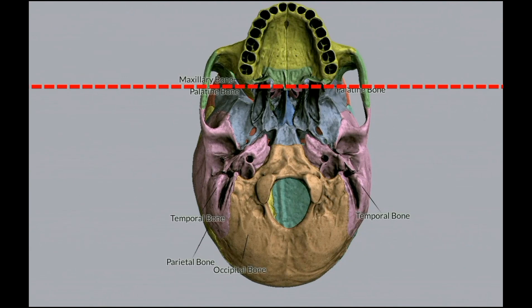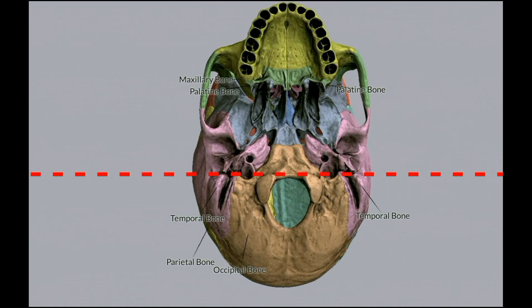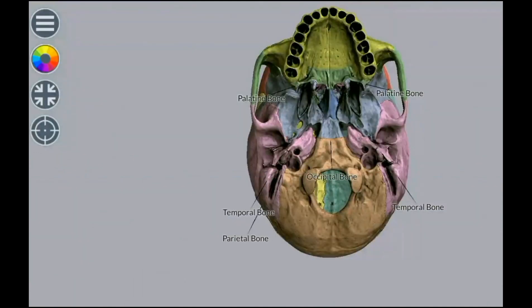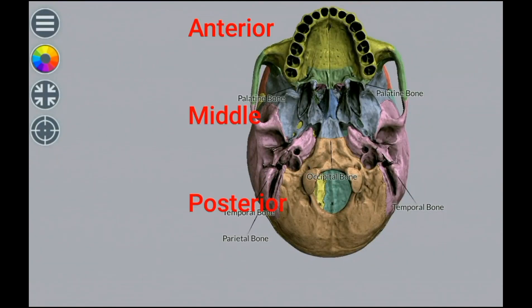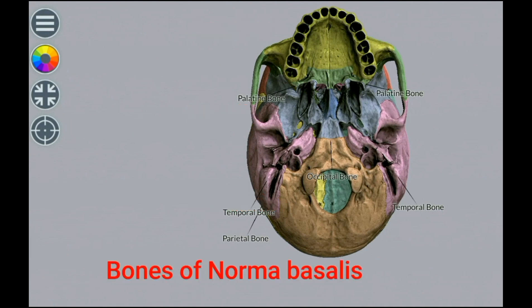Norma basalis is divided into three parts: from the anterior margin of the alveolar arch to the posterior margin is the anterior part; from the posterior margin of the alveolar arch to the line passing in front of the foramen magnum is the middle part; and whatever is behind the line passing in front of the anterior margin of the foramen magnum is the posterior part.